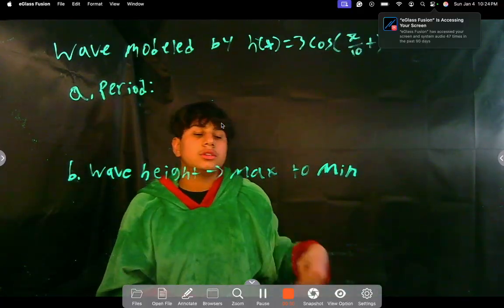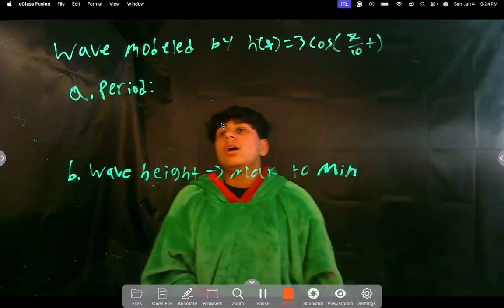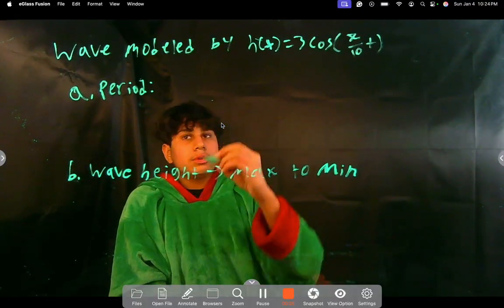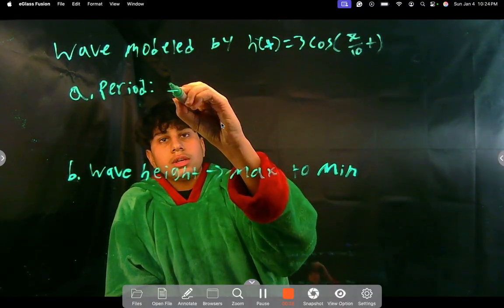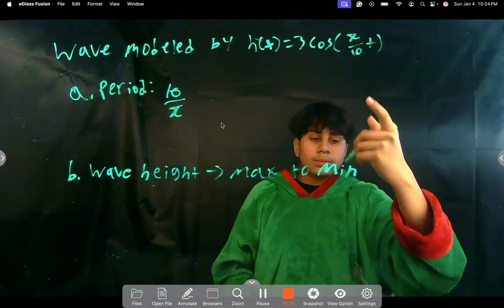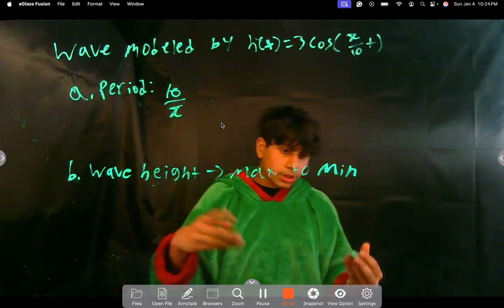First we have to find the period—that's part A of this question. How do you find the period? Well, it's going to be the reciprocal of what t is being multiplied by. Because, as you all know, when you're doing a stretch or horizontal stretch or a shift...